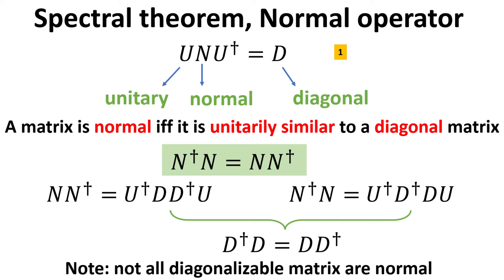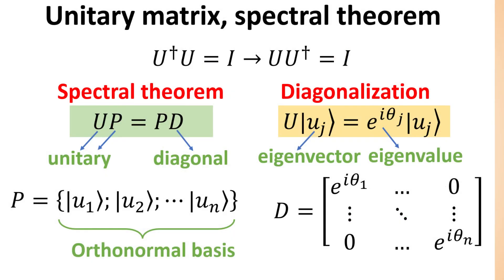This result is easily shown using the diagonalization and unitary matrix properties. In what follows, we shall elaborate on the spectral theorem for the two most commonly used normal matrices: the unitary and Hermitian matrix. The spectral theorem for the unitary operator states that for each unitary matrix U, there is another unitary matrix P which satisfies the spectral theorem in the green box. Here D is a diagonal matrix. The matrix P and D can be constructed from the eigenvectors and eigenvalues of U, obtained by its diagonalization as shown in the yellow box.